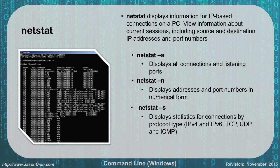NETSTAT displays information for IP connections on a PC, including current sessions with source and destination IP addresses and port numbers. Running netstat -a displays all established connections and listening ports. In the example, you can see TCP and UDP connections listed with the local address and port for this computer, the foreign address — one of which shows Yahoo.com — and the connection state: listening, established, or time-waiting.